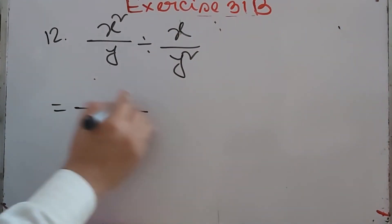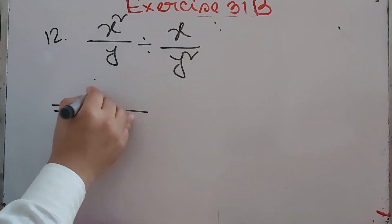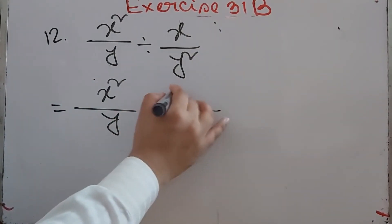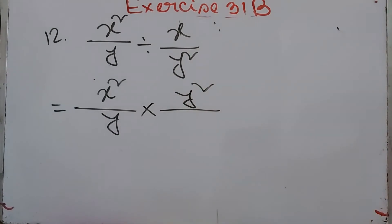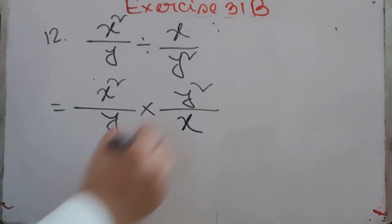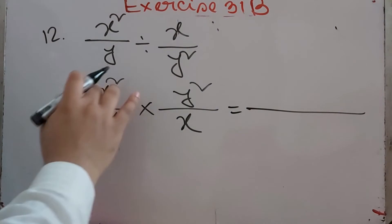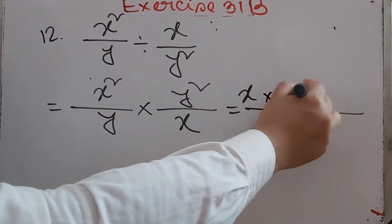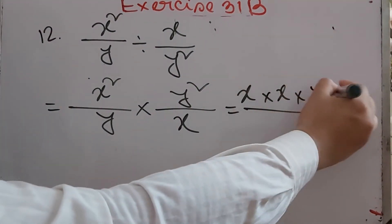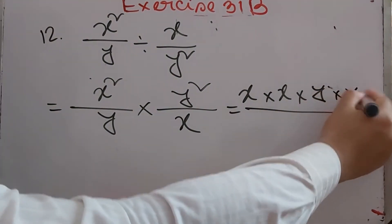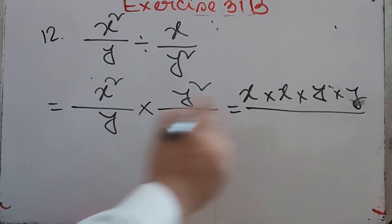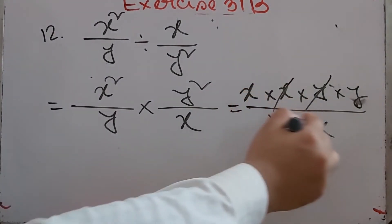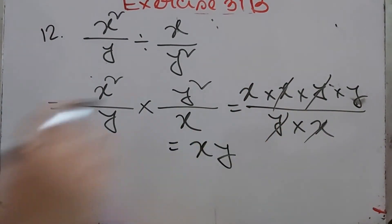Number 12: x²/y divided by x/y². Multiply x²/y by the reciprocal y²/x. Expanding: x×x × y×y, divided by y × x. We can cancel y by y and x by x, leaving xy as the answer.